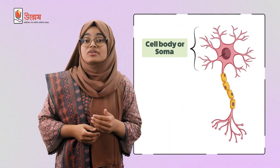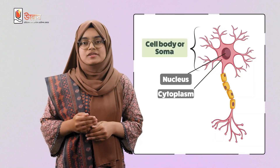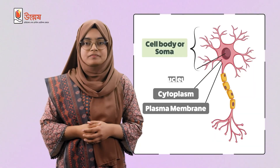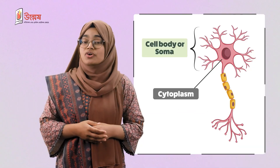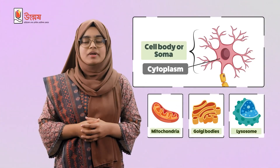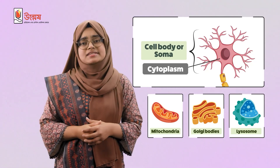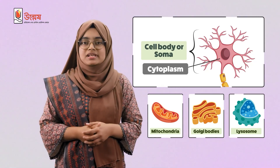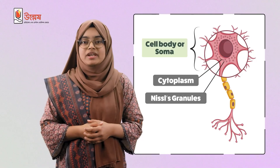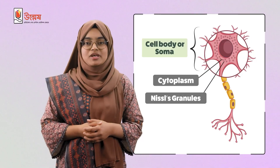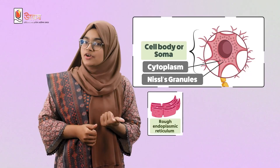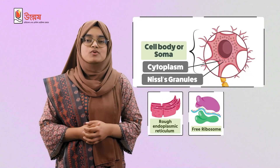The cell body contains a nucleus and cytoplasm that remains bound by a plasma membrane. The cytoplasm contains mitochondria, Golgi body, lysosome, and other organelles just as a typical animal cell. But the special feature of a neuron is the presence of Nissl granules in the cytoplasm, which are made up of rough endoplasmic reticulum and free ribosomes.